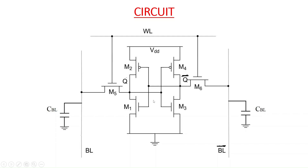This is a six transistor SRAM cell. CBL and CBL bar denote the capacitance of the bit lines. Since both bit lines will have the same capacitance, I have denoted both as CBL. So bit line and bit line bar both have capacitance CBL.